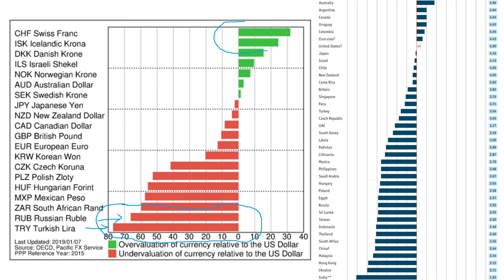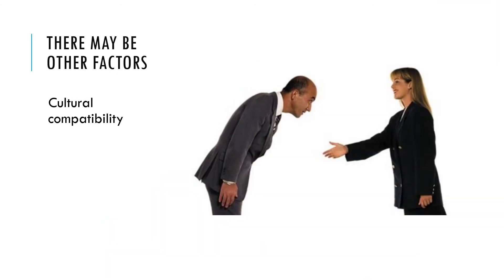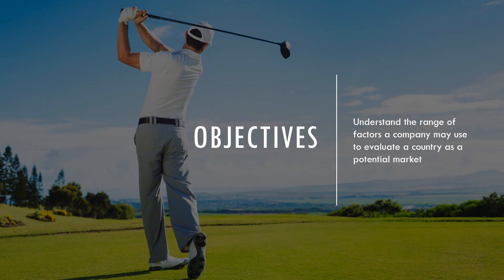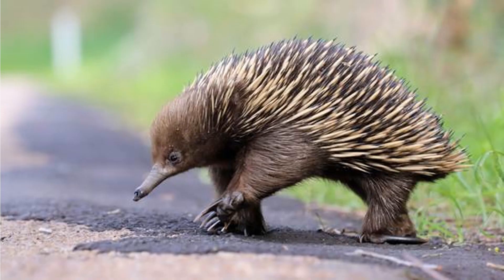Countries with a stronger exchange rate may be more desirable markets — if we sell there successfully, the value we receive when bringing money back is likely to be quite high. There may also be other factors to consider, such as cultural compatibility: will our products sell well in another country? For example, can McDonald's sell beef burgers in Hindu-majority India? The level of domestic competition may be another factor, as well as strategic reasons like diversification of risk or the economic cycle. In this video we've looked at the range of factors a company may consider when evaluating whether a country is a good potential market.